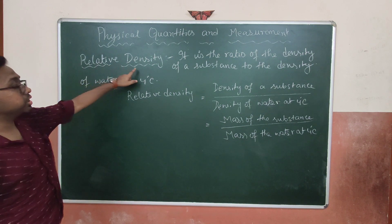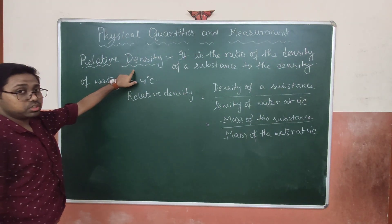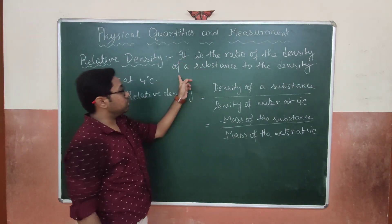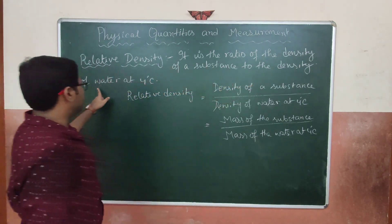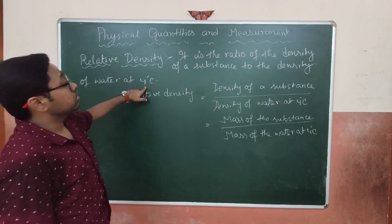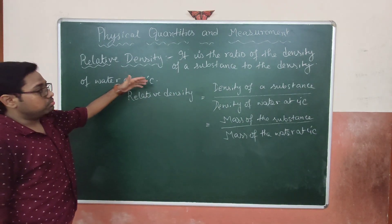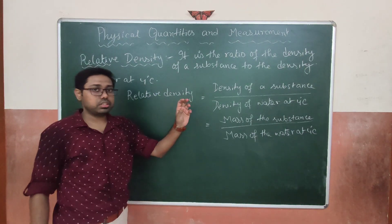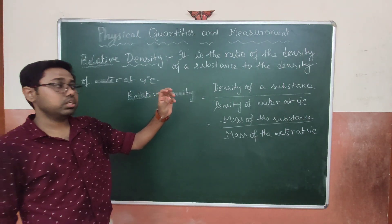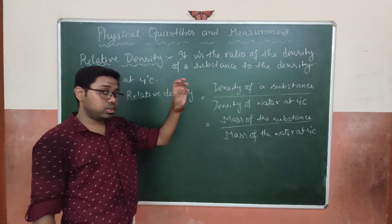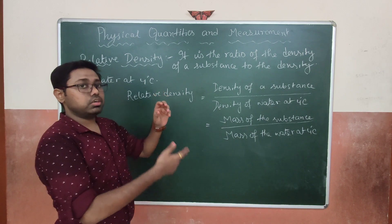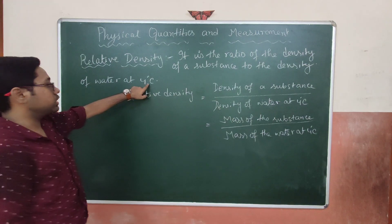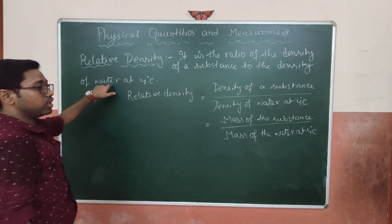Next, we will learn about relative density — a very important topic. Relative density is the ratio of the density of a substance to the density of water at 4°C. We are comparing the density of a given object with the density of water at 4°C. The reason 4°C is used is that at this temperature, the density of water is at its maximum.